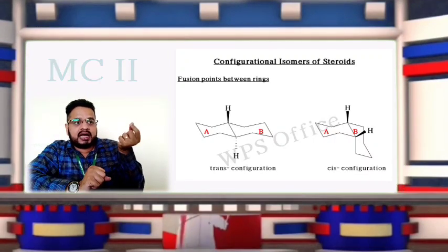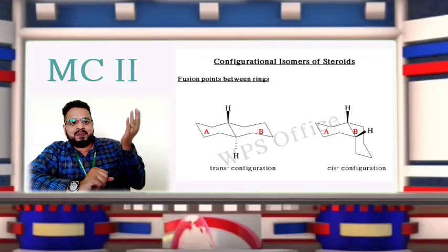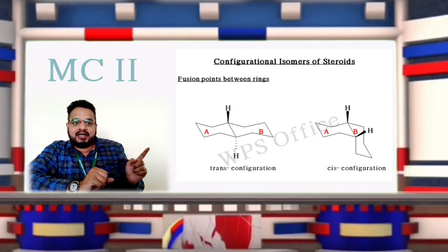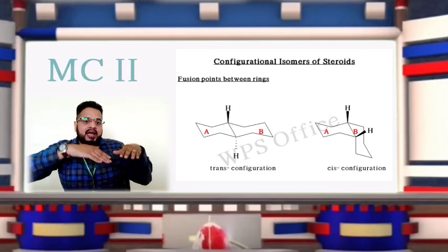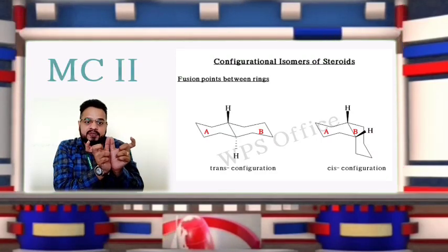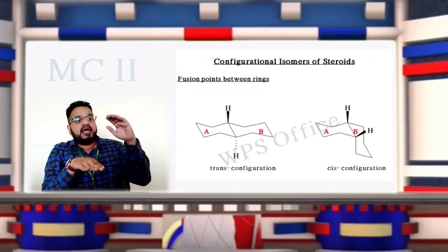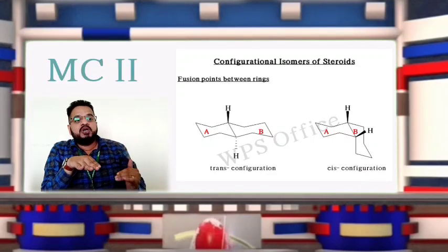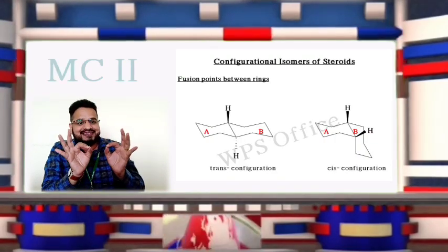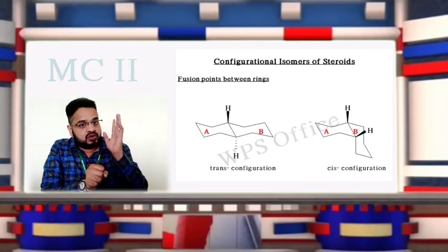When A and B rings are fused, one proton is above the plane — shown by the dark line — and the other proton is below the plane — shown by the dotted line. When both rings are in chair conformation and form a plane, one proton above and one below means A and B rings are connected to each other in trans configuration.